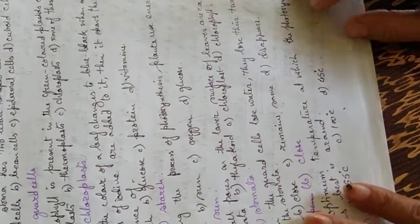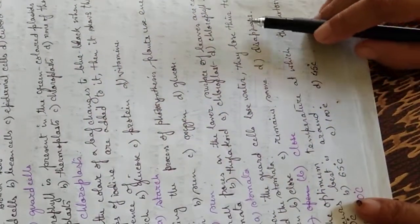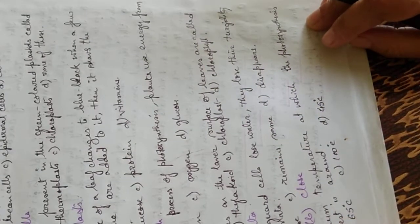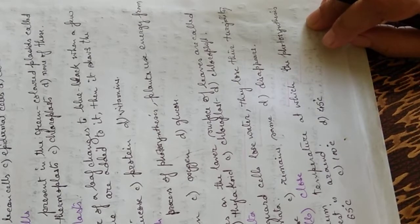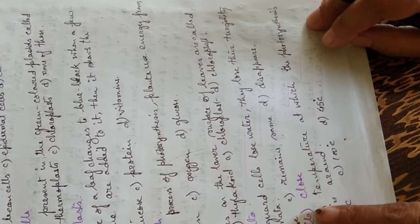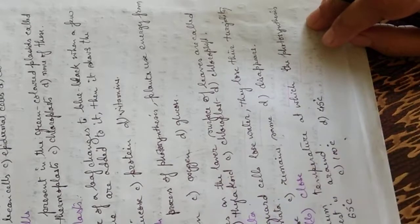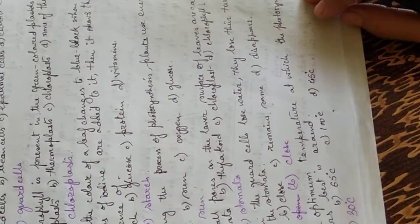When the guard cells lose water, they lose their turgidity and the stomata - what happens to the stomata? Options are open, they close, they remain the same, or they disappear. They close.